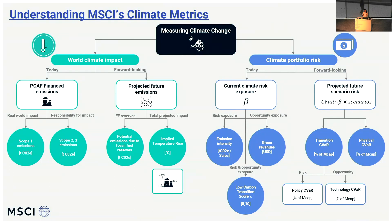One forward-looking metric the team works on, just as an example, is an implied temperature rise metric expressed in degrees Celsius. It compares a company's projected total emissions over the next 50 years against its company-specific fair-share carbon budget for staying well under two degrees. The extent to which a company overshoots or undershoots its allocated budget is then converted to an implied global temperature rise — meaning how much warmer the world would be if the entire economy were to overshoot or undershoot the budget to the same extent as that one company.